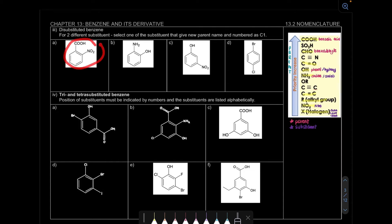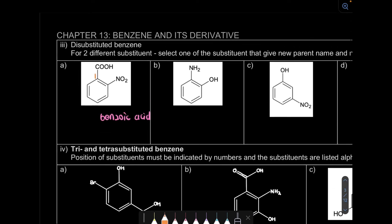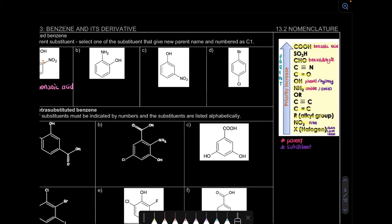For example A, we have carboxylic acid and NO2 (nitro). Carboxylic acid has the highest priority, so it becomes the parent — benzoic acid, numbered as carbon 1. We want NO2 to have the smallest number, so NO2 is on carbon 2. The name is 2-nitrobenzoic acid, or you can write ortho-nitrobenzoic acid. For question B, between NH2 and OH — OH is higher priority — so OH is the parent, phenol, at carbon 1. NH2 is at carbon 2, becoming amino. So the name is 2-aminophenol, or ortho-aminophenol.